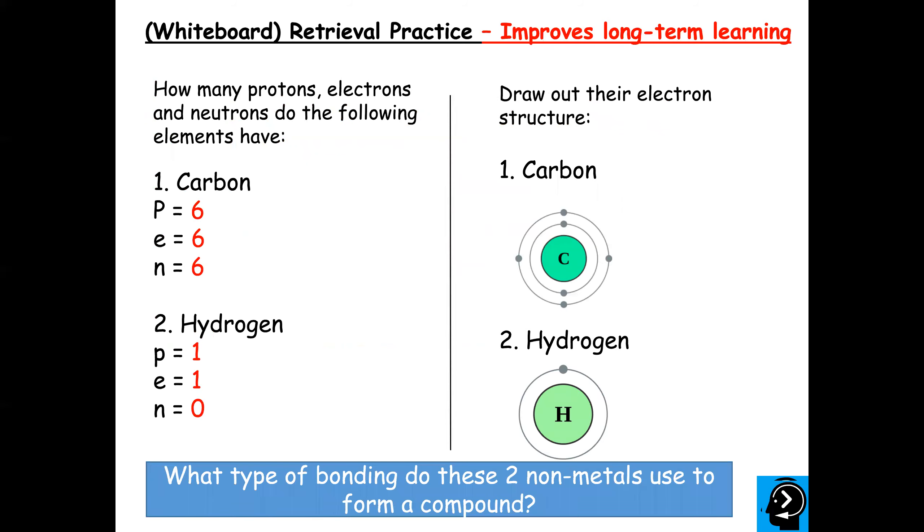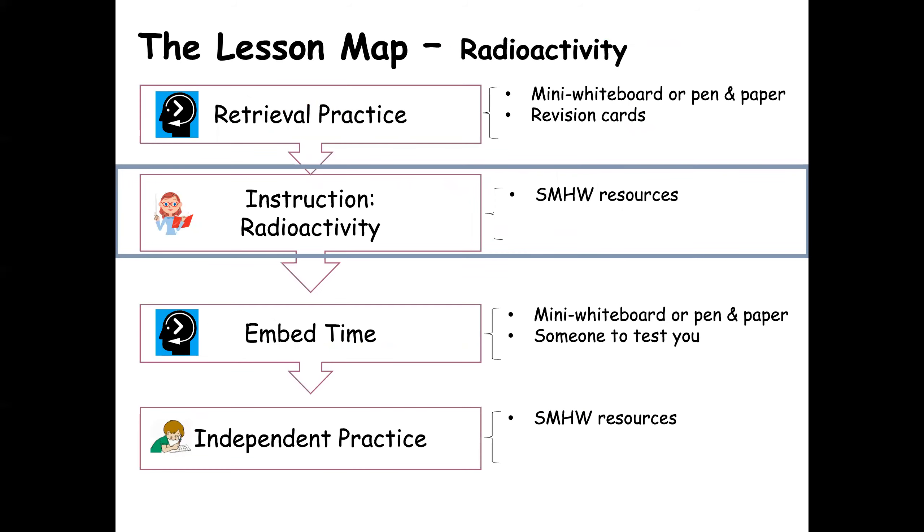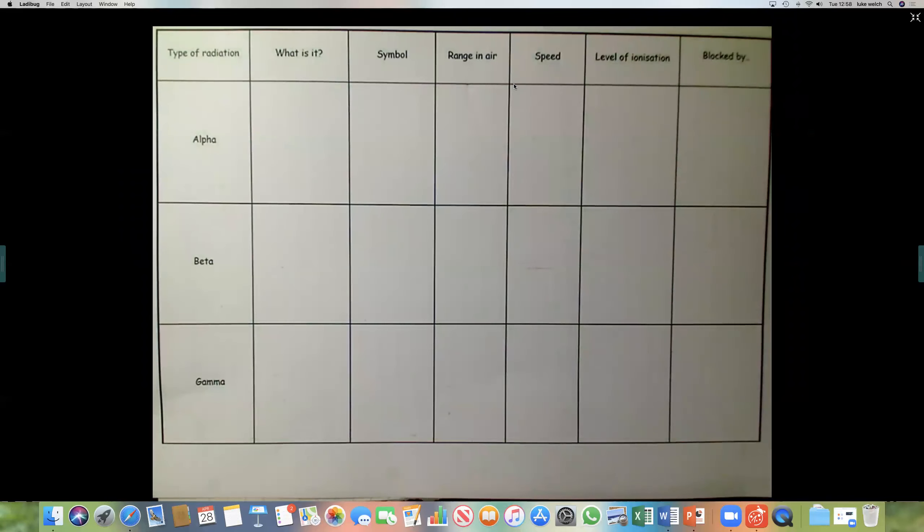Okay. Today guys, we're going to be looking at the different types of radiation that an isotope can emit. So first of all, you needed to either drawn out or printed out the table attached to show my homework. It's completely fine, whichever way you want to do it. If you're trying to save some ink, it's absolutely fine. Just draw it out.